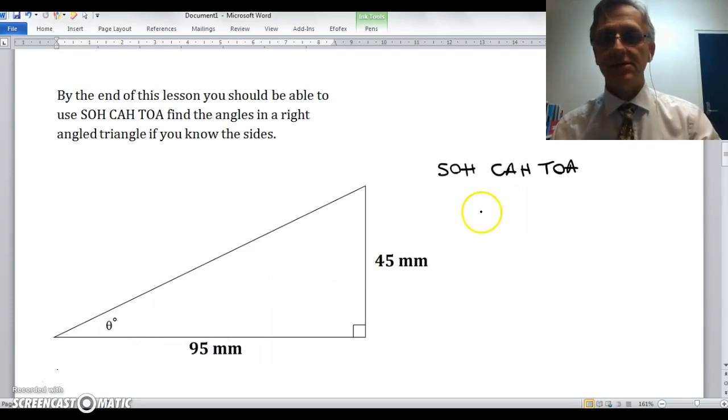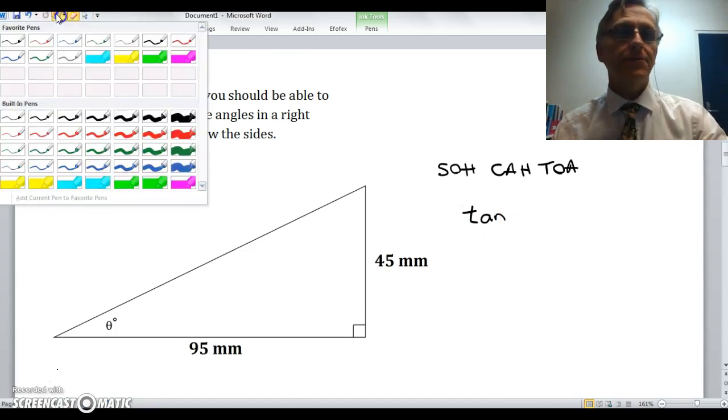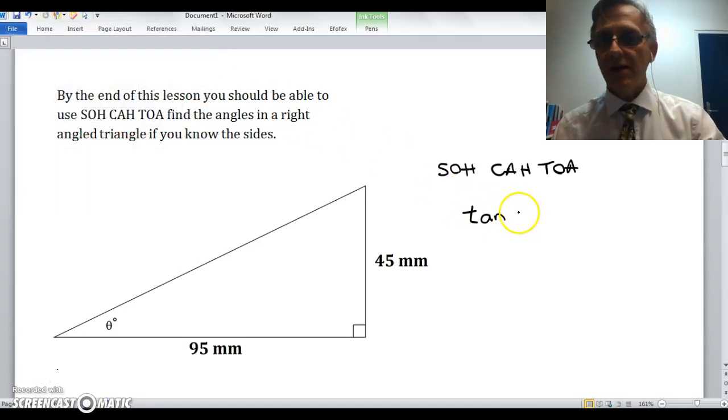Opposite over adjacent. So I'm going to write down that tan of theta this time, not a number, but theta, because I don't know the number of degrees, I'm only given the letter. So if I write down tan of theta is equal to opposite over adjacent, so it's 45mm over 95mm.